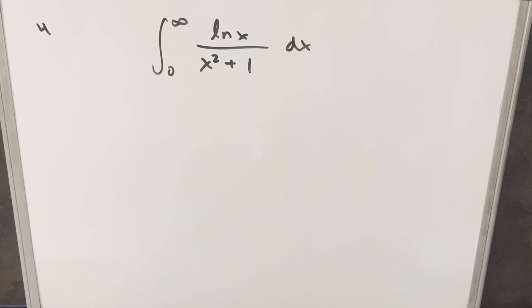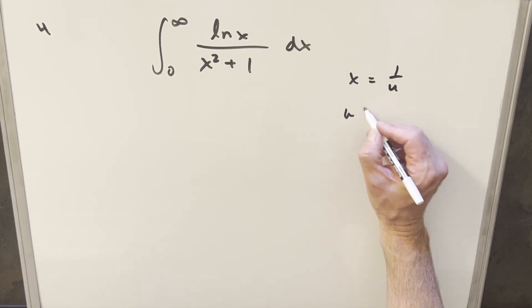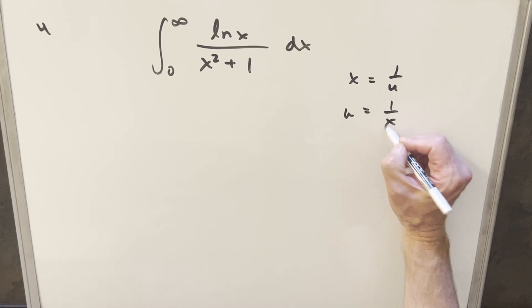To get started for this method, what I want to use is kind of the idea of flipping the bounds around, making a substitution where we set x, well, we can start with either variable, but if we set x equal to one over u, then we're saying u is going to be equal to one over x.